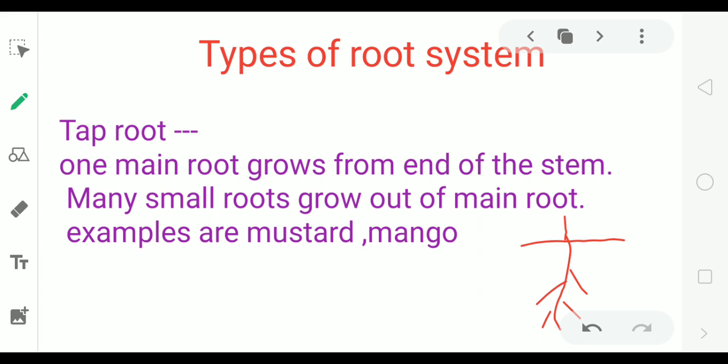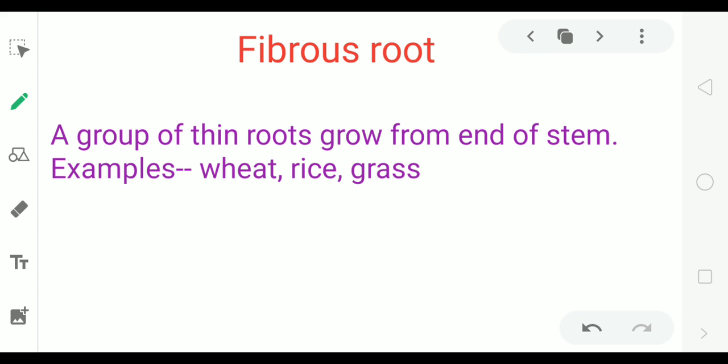In fibrous root system, a group of thin roots grow from end of stem. In this system, from the end of stem, a group of roots arise. This type of system is called fibrous root system. Examples are wheat, rice, and grass.